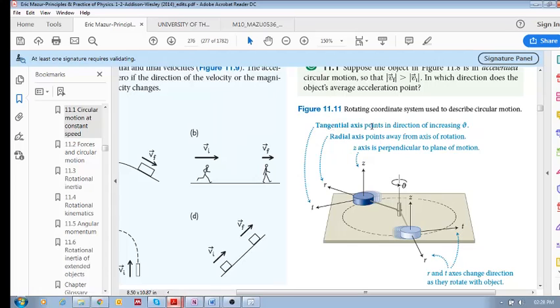So tangential axis points in direction of increasing theta. Radial axis points away from the axis of rotation, so that's increasing radius.